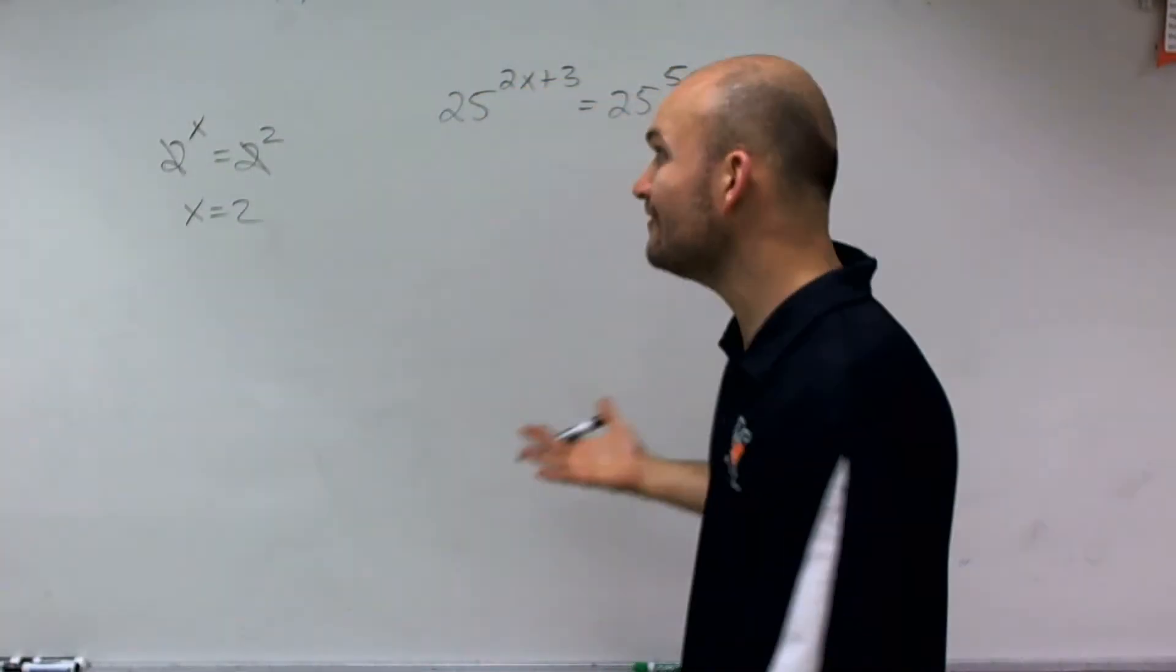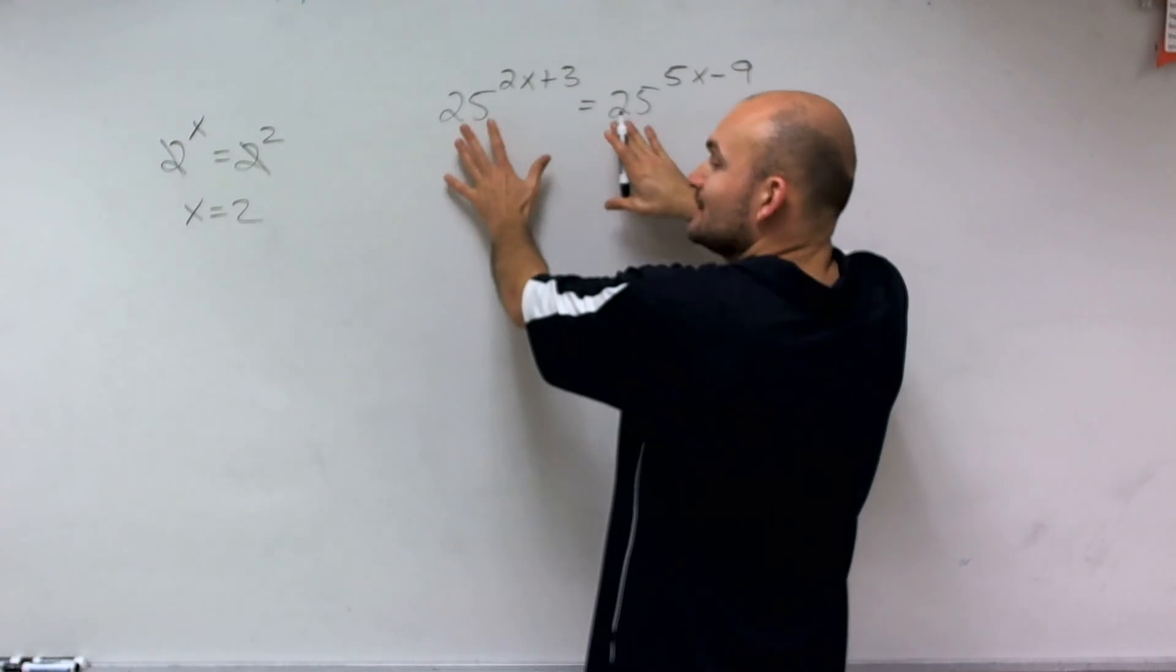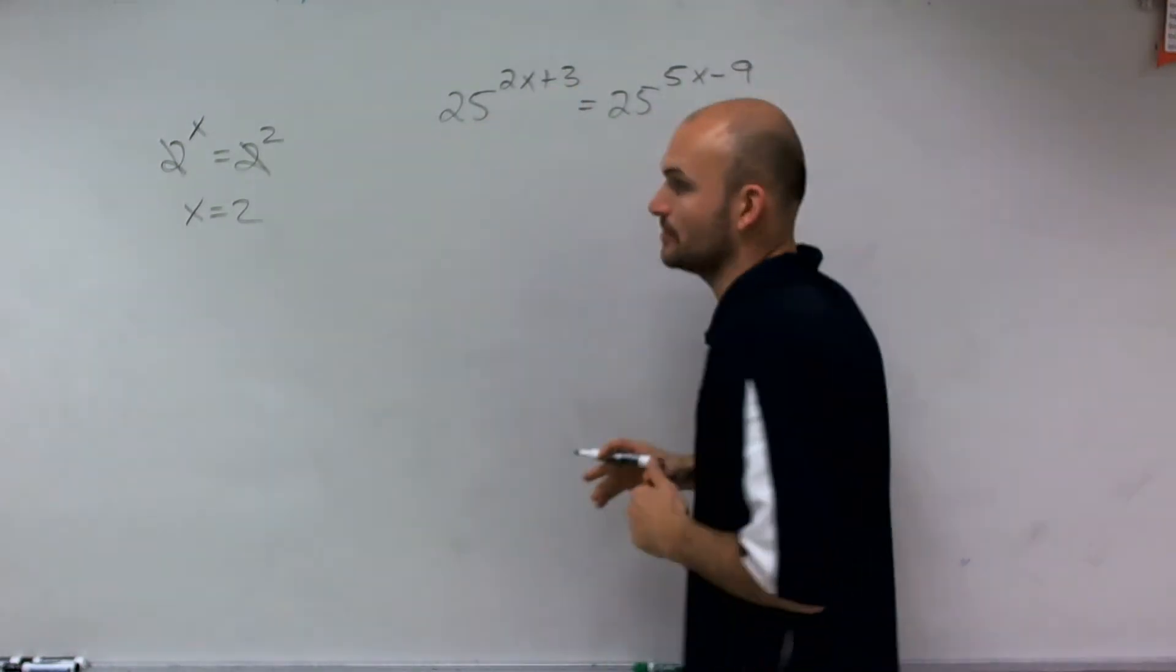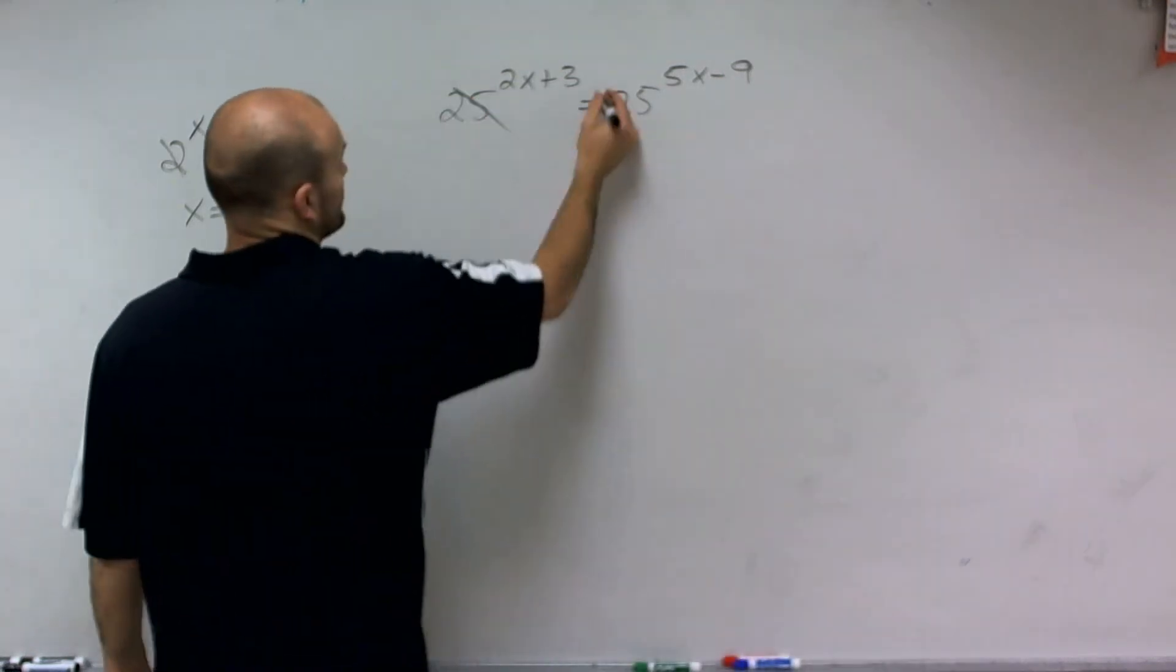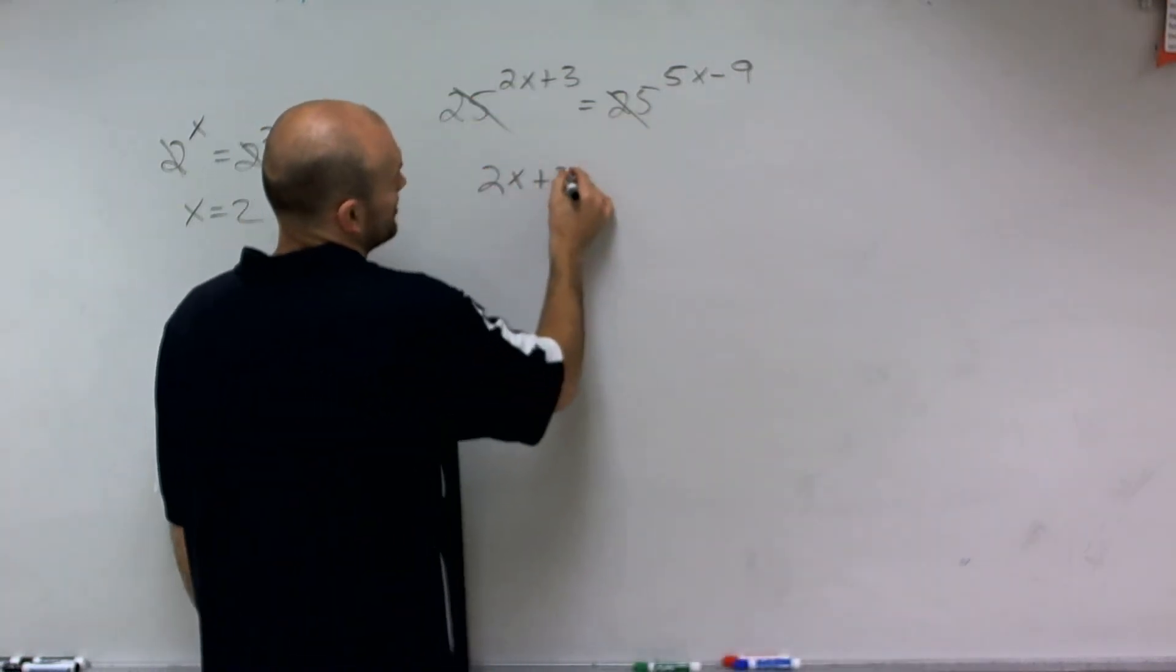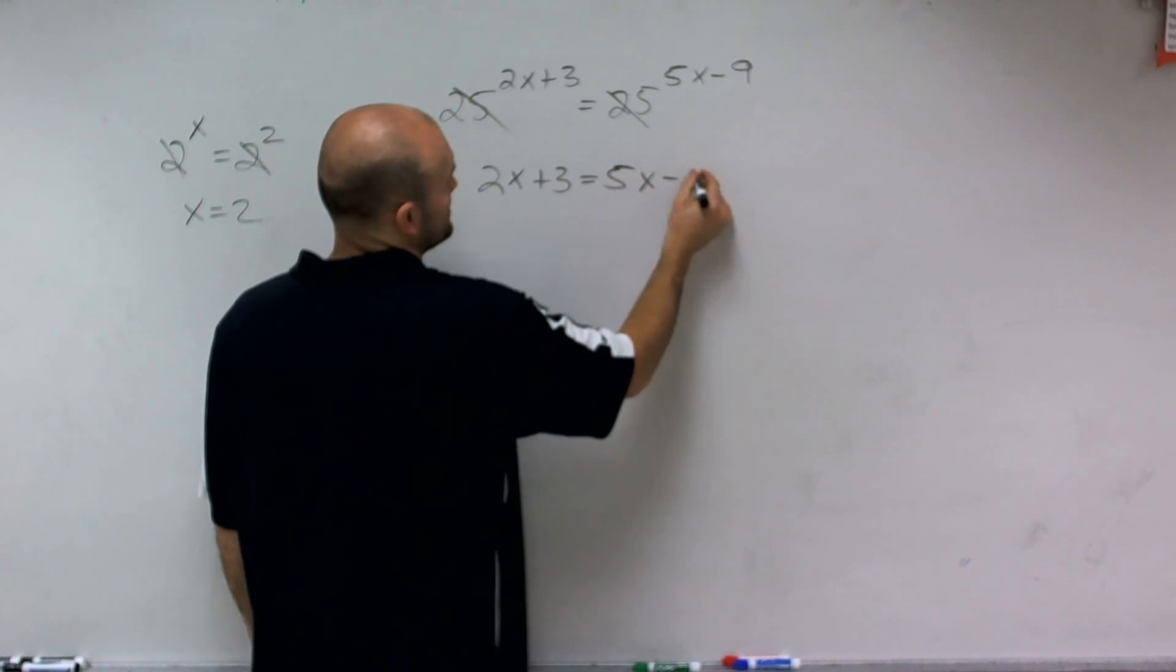So when solving a problem like this, as long as we have the exact same base and we're raised to the exponent, we know that the exponents have to be equal to each other. Therefore, we can say 2x+3 is equal to 5x-9.